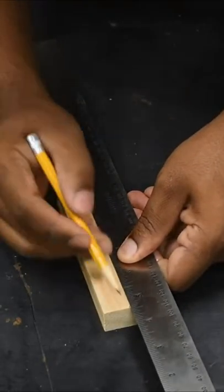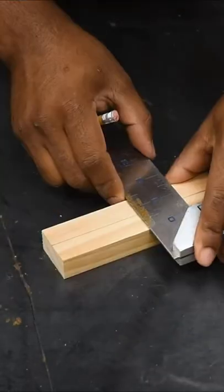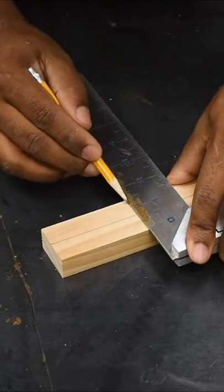For this tip, I'm going to show you how to make a really quick and simple center marking gauge. All you need is a piece of scrap wood to get started.